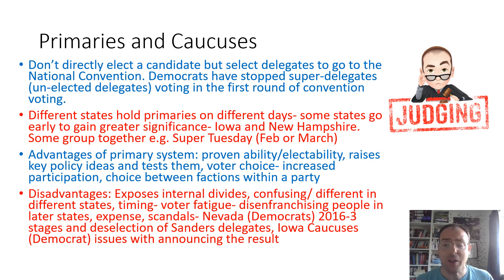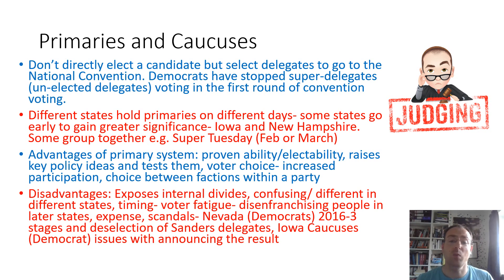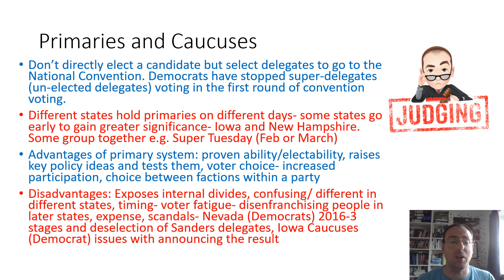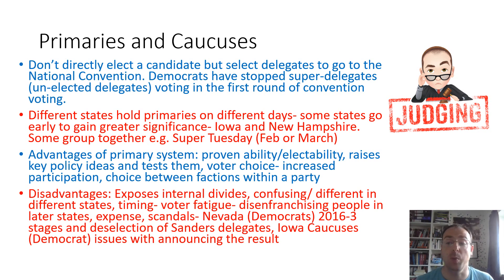There are advantages to the primary system. It means that candidates have to show they have a proven ability and electability. It raises key political issues and tests them out, which can be important for the platforms of the parties going into the main election. It offers voter choice, which increases participation, and it gives the Democrats, for example, a clear idea of which faction is most popular at that point in time.